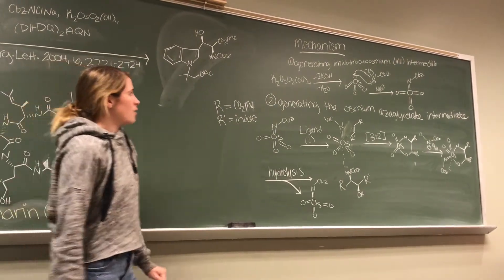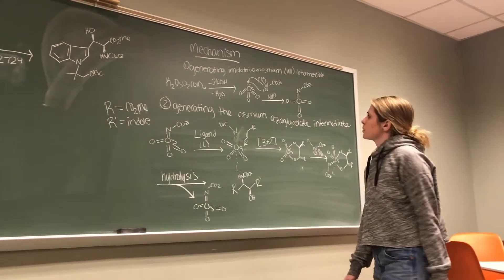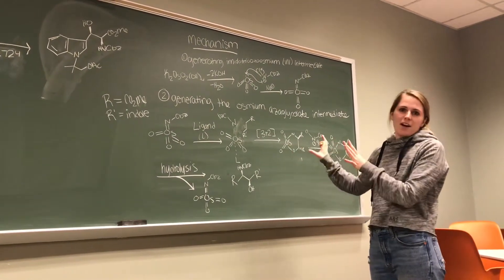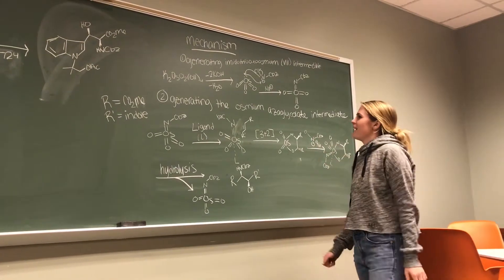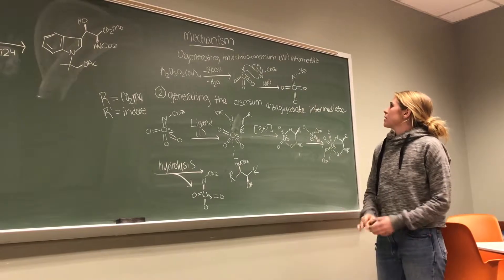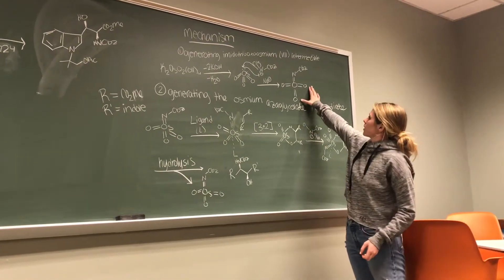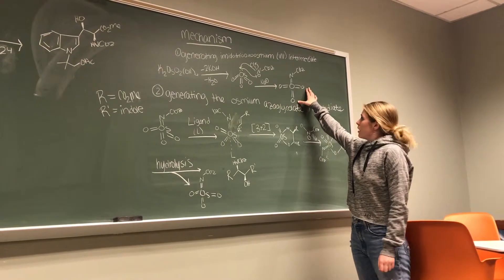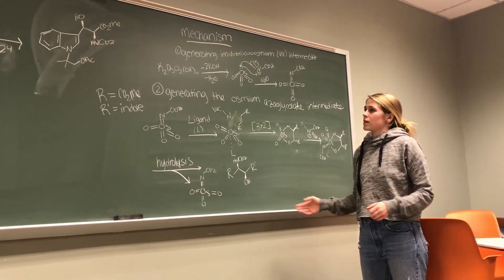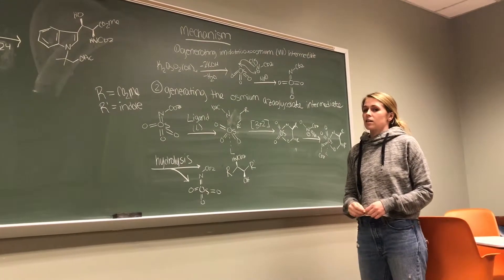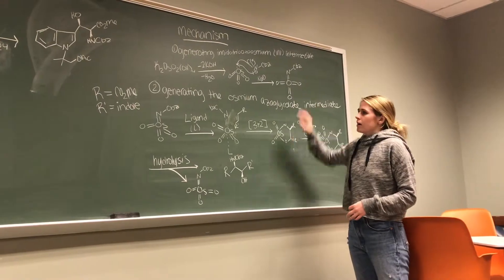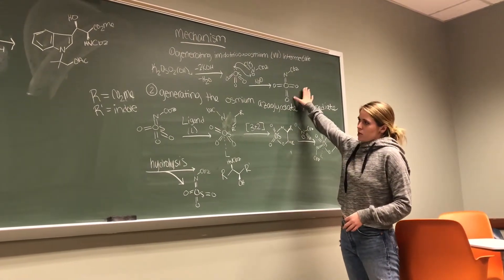Now, so if we break down the mechanism a little bit, there's a couple things going on. So we have broken it down into steps to kind of look at it not at everything at once. And so the first step, we're going to look at generating the imidotrioxide osmium intermediate, which is this right here, which is a key portion of this mechanism. Actually, this mechanism can be drawn in a multitude of ways. Sometimes it's a catalytic cycle. But so ultimately what happens is that this gets regenerated. So just remember that this gets regenerated at the end.